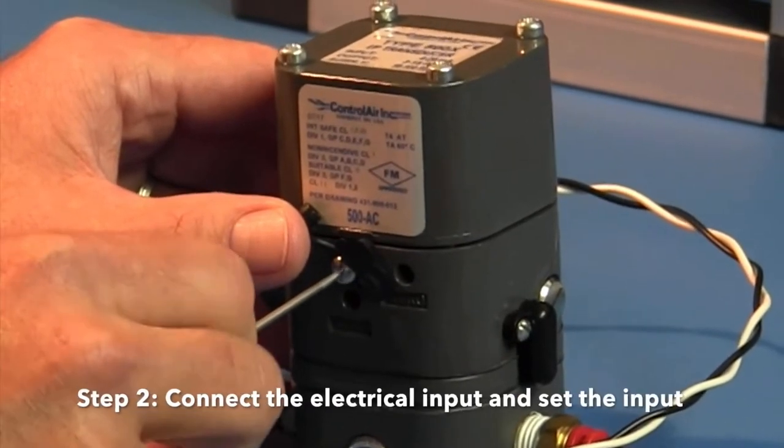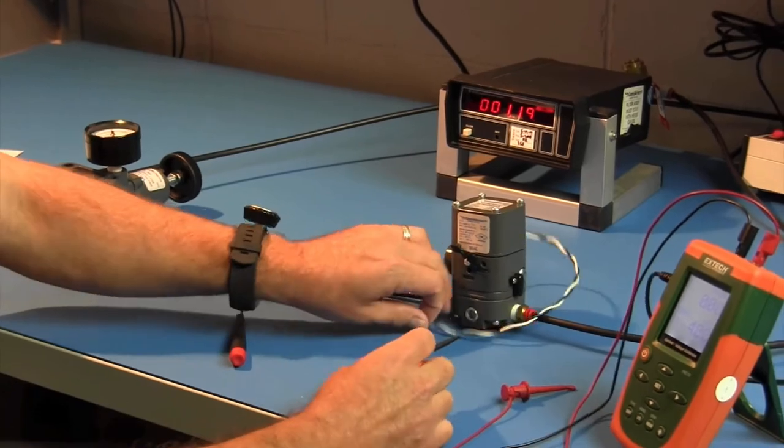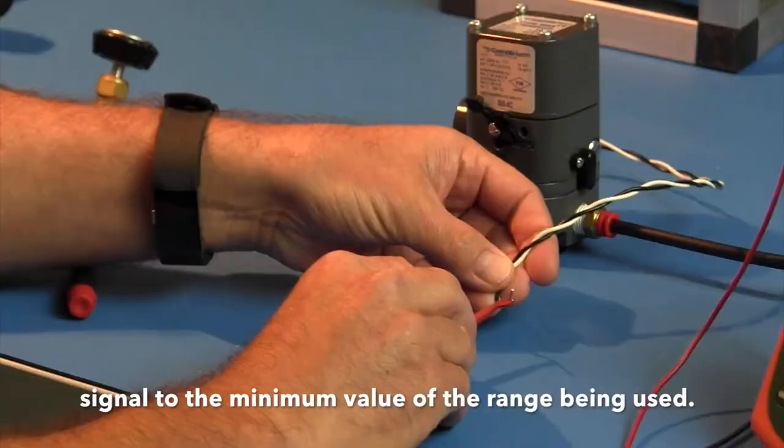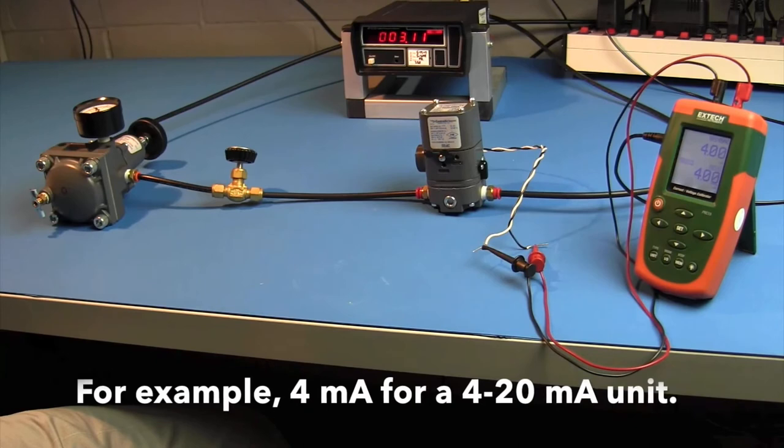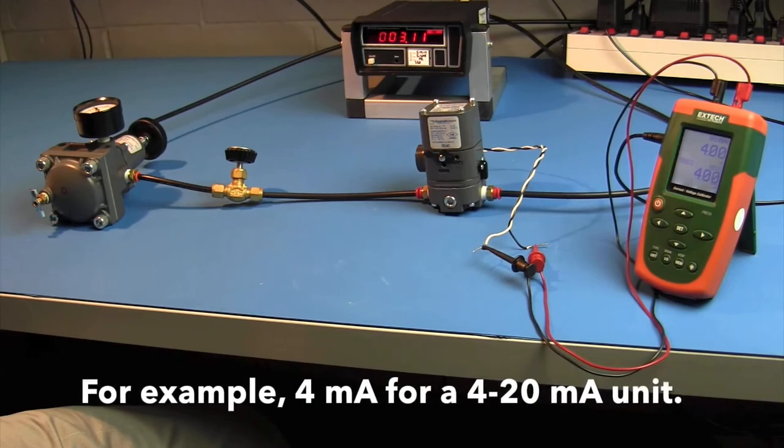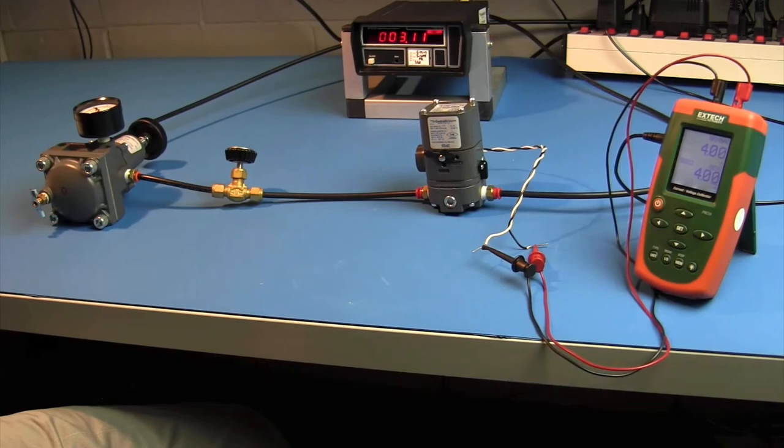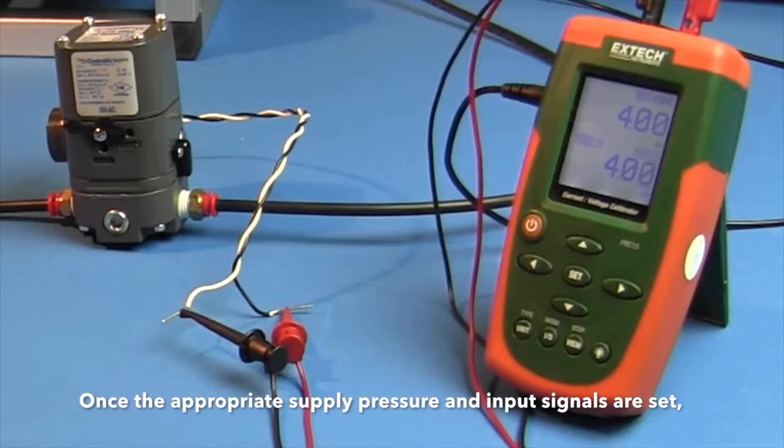Step 2. Connect the electrical input and set the input signal to the minimum value of the range being used. For example, 4 milliamps for a 4 to 20 milliamp unit. Once the appropriate supply pressure and input signals are set, calibration can begin.